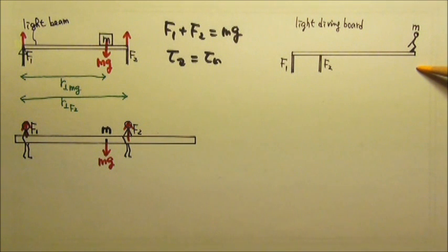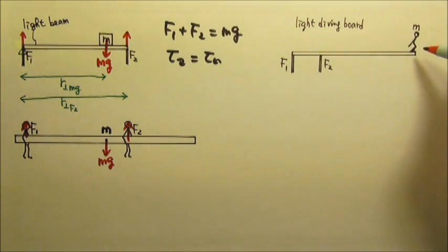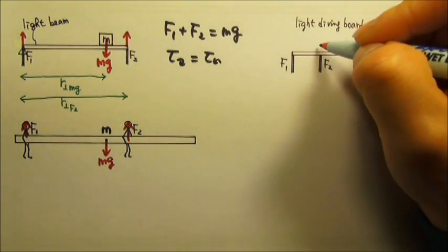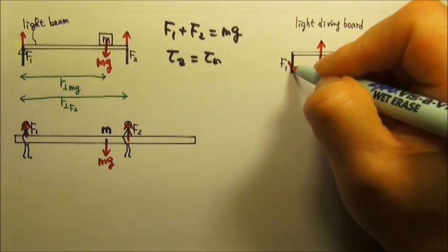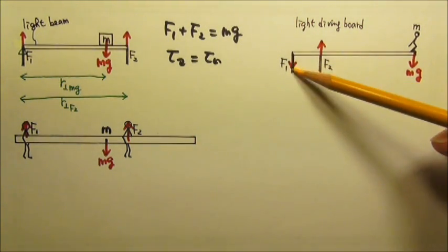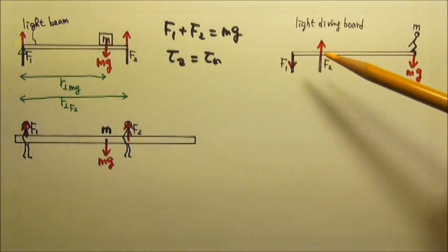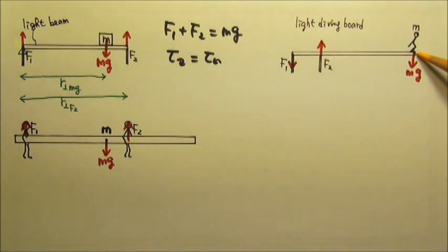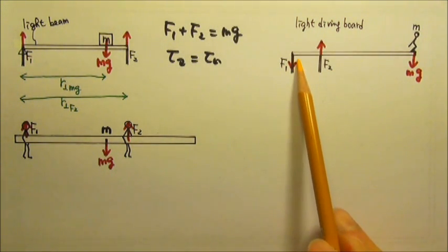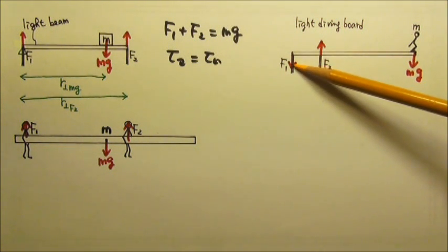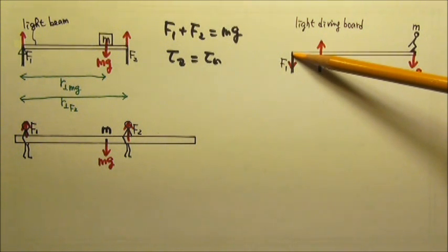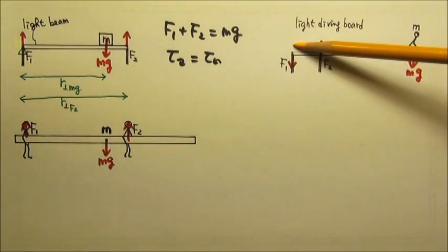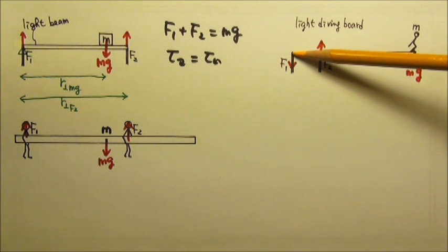This diving board problem is trickier. If we draw the force diagram, we would have Mg over here, and F2 is a support force that goes upward. But F1 is a support force that goes down, not up. If the direction of the force is not obvious, we can pretend that we remove F1. If we remove F1, this end goes down and this point goes up. That means in order to keep it in place, F1 has to be down.